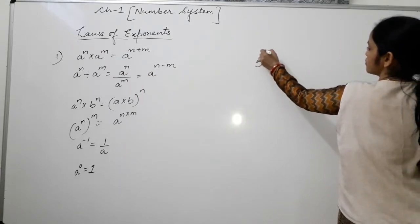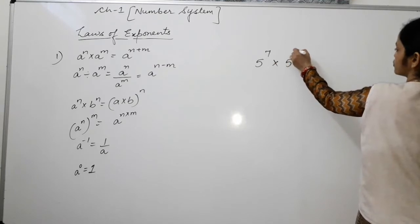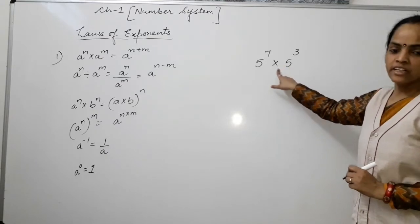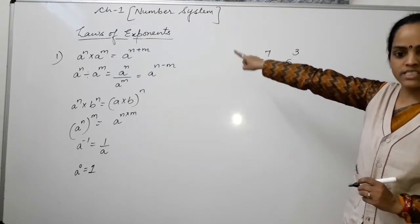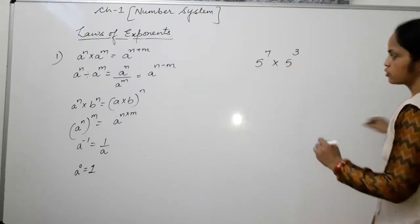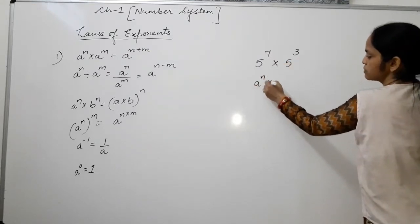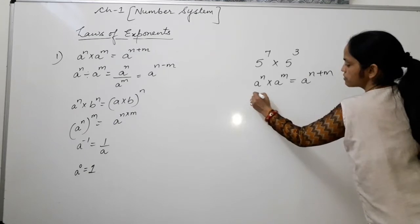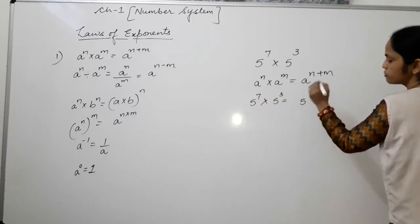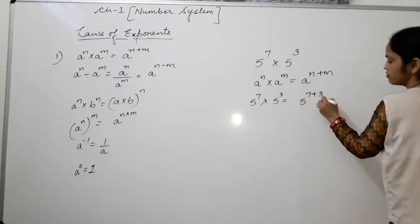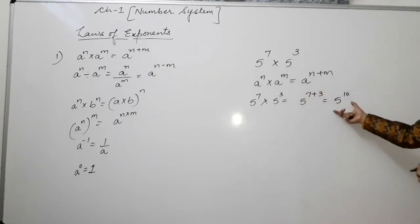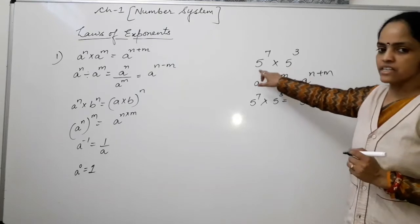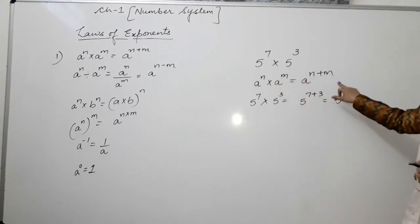For example, 5 to the power 7 multiplied by 5 to the power 3. Both the base numbers are same and both are in multiplication. The law says we can add the powers: a to the power n multiplied by a to the power m equals a to the power n plus m. So 5^7 × 5^3 = 5^(7+3) = 5^10. According to the first law of exponents, if bases are same and are in multiplication, then powers are added.